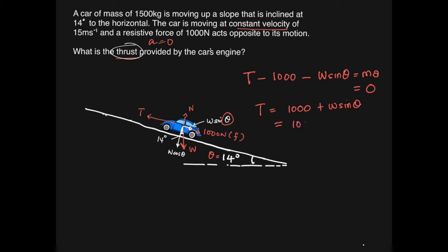And we can put this in: 1000 plus mg sine 14 degrees. You substitute in the values: 1000 plus 1500, which is the mass, times 9.81 sine 14 degrees. You solve it, you get 4560 Newton, and you can also make it to 2 significant figures, which is 4600 Newton.